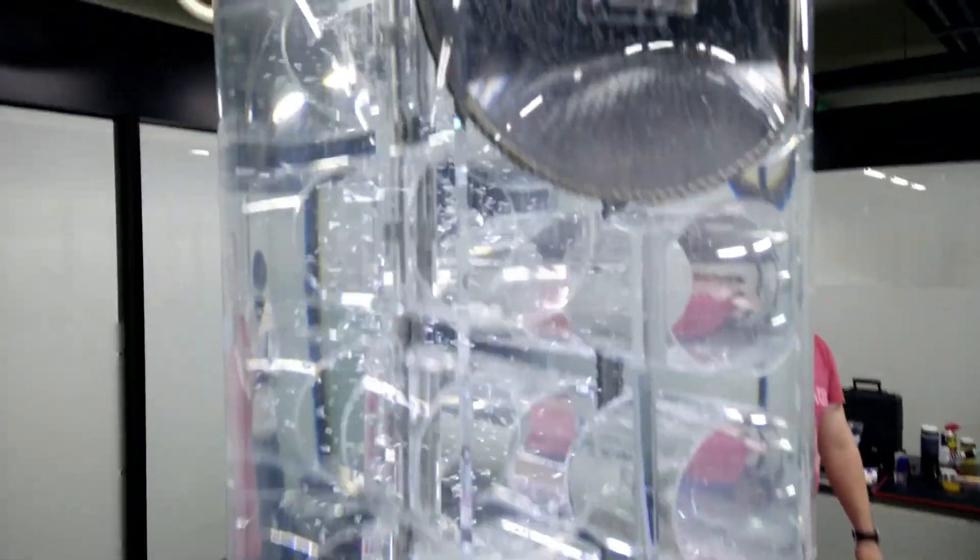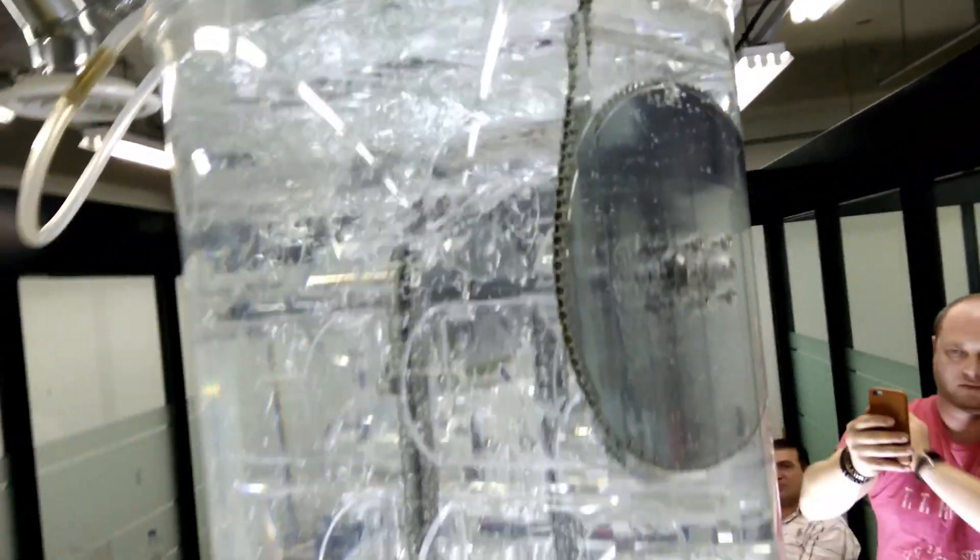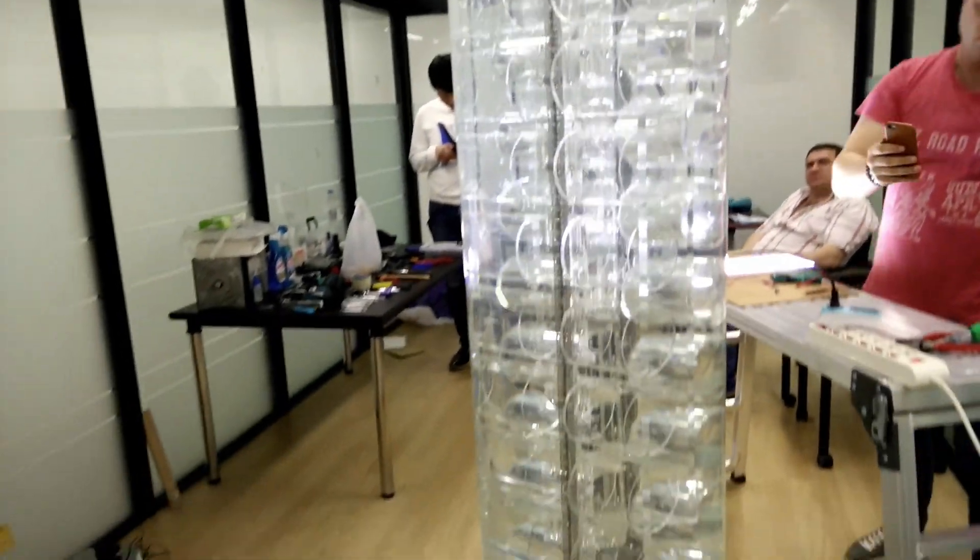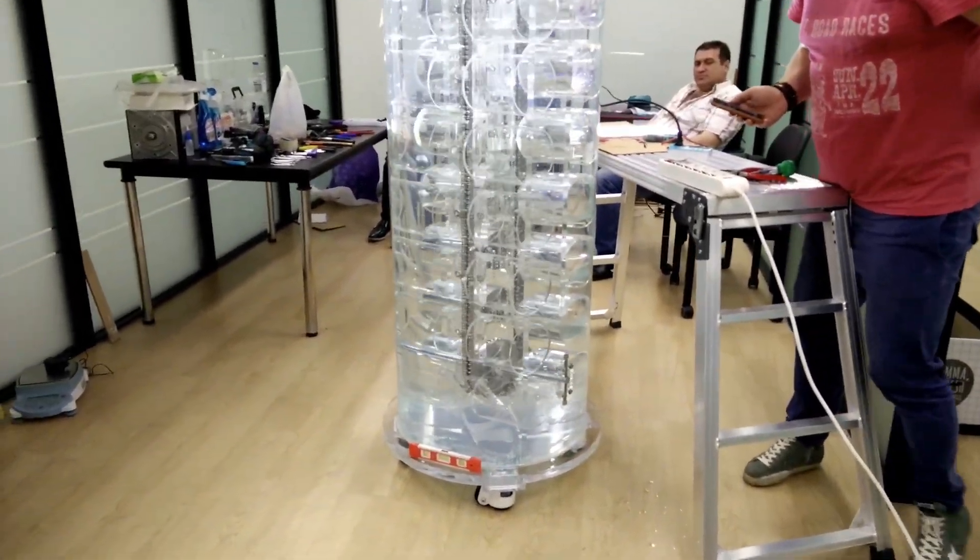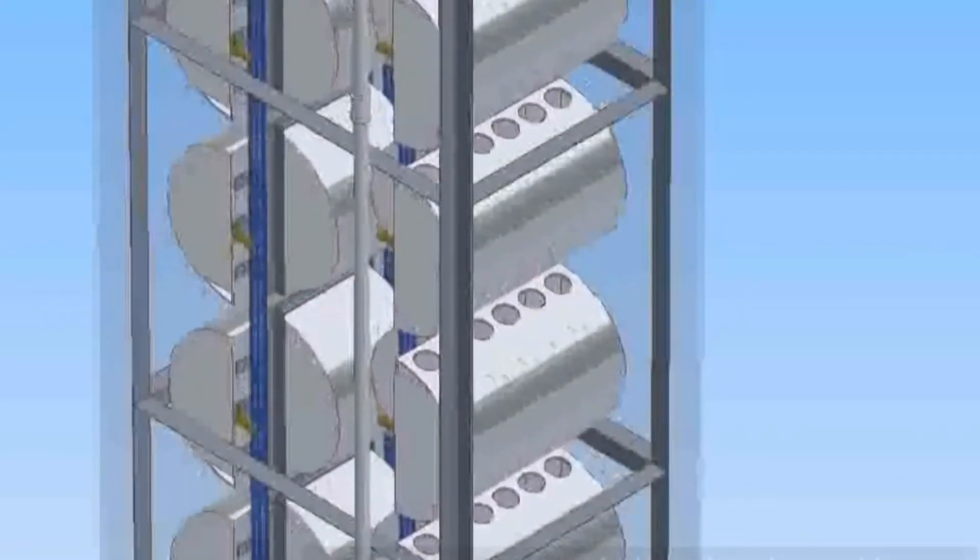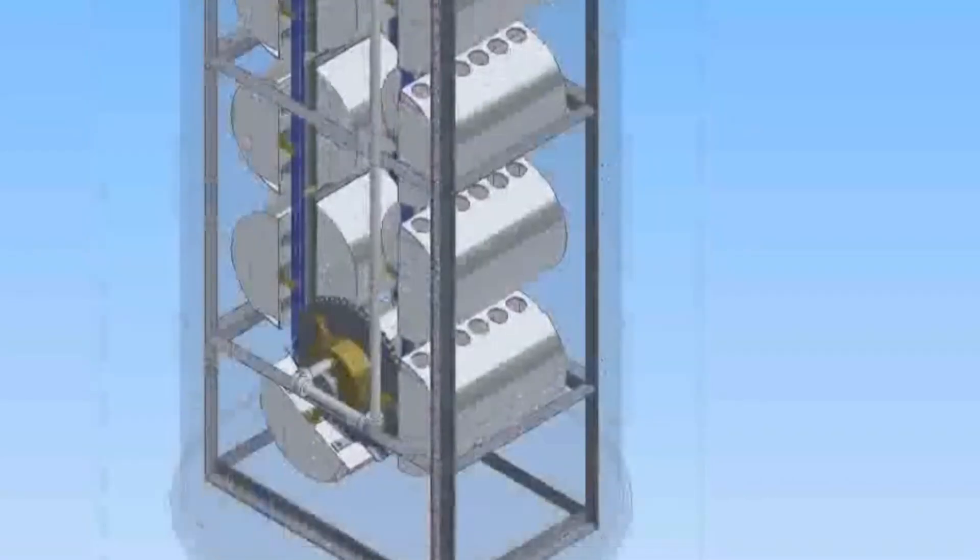Integrating captured energy into local microgrids proves viability as a baseline power source for remote off-grid communities. With further optimization, scaling begins by seeding regions lacking infrastructure. Self-contained units need no fuel transport, reducing carbon footprints versus diesel alternatives while empowering self-sufficiency.